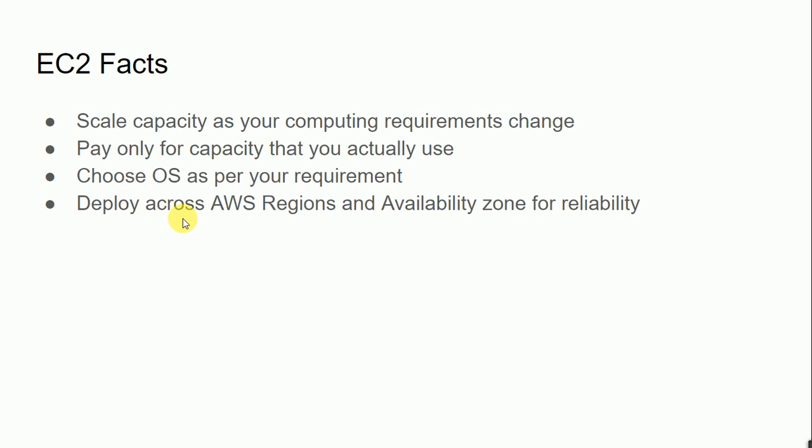You can deploy across AWS regions and availability zones for reliability. If we compare with the classic version — for example, if your data center is in the US and you try to access from India or Asian countries, the latency is higher compared to US-based users. With EC2, whenever we set up an instance, we have options to select the right region where we can deploy based on our requirements.